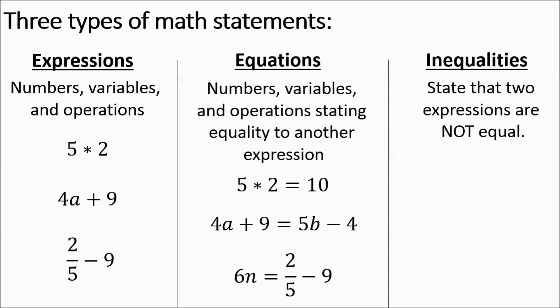Inequalities state that two expressions are not equal. So basically, things involving inequality signs. 5 times 2 is greater than 3. 4a plus 9 is less than 28. Or 6n is not equal to 2 fifths minus 9. Those are all inequalities. Most of you are used to seeing the greater than, less than signs, but this is also an inequality.